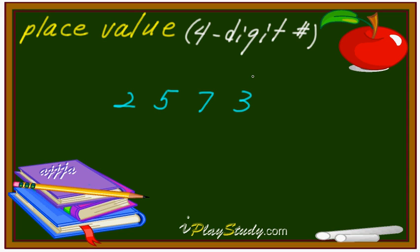So place value for the right-hand side, which is 3, is 1's digit, right? That's right. 1, or 1's, or 1's digit.